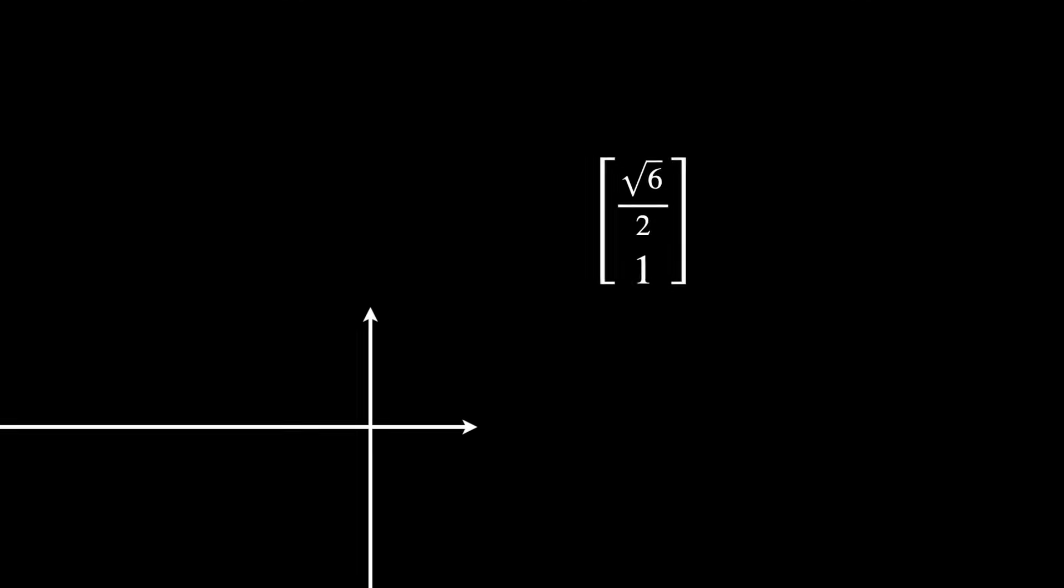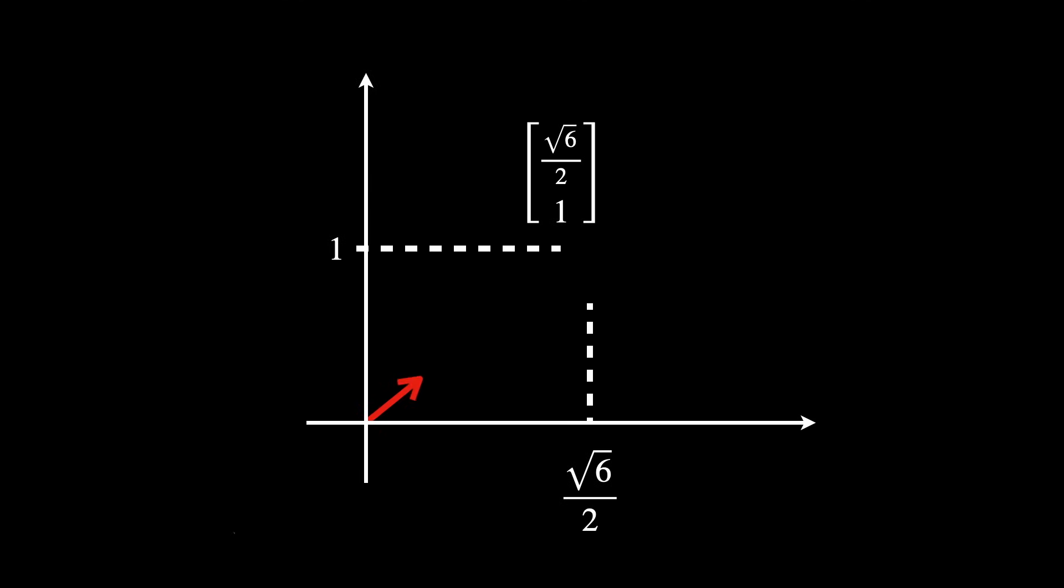which spans the one-dimensional space that is a line defined by the direction square root of six over two, one, for all values Vy that are real numbers.